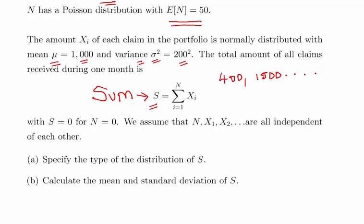The thing about this is we don't know what N is, and from month to month it can vary. There might be 90 claims in one month—actually, the expected value is 50, so it could be 40 claims in one month and then 55 the next month and so on.